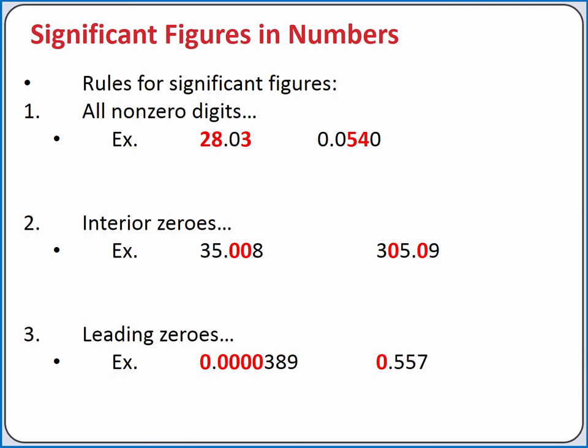So in the number 0.0000389, we only have three significant figures.